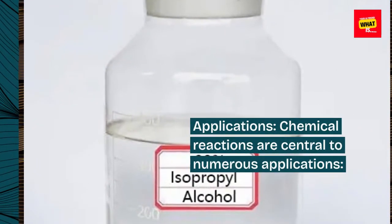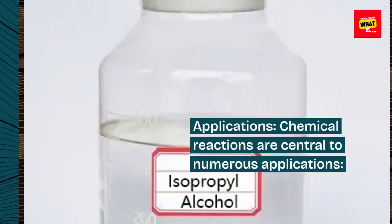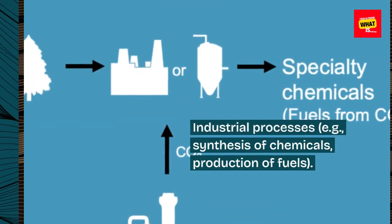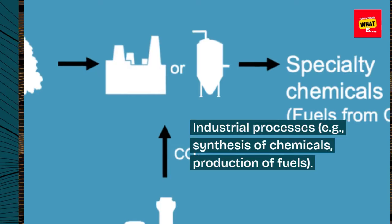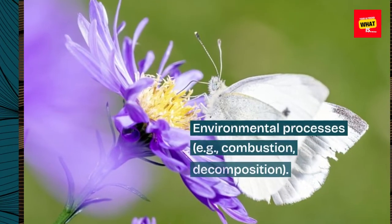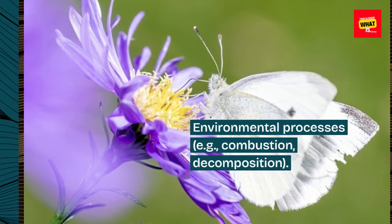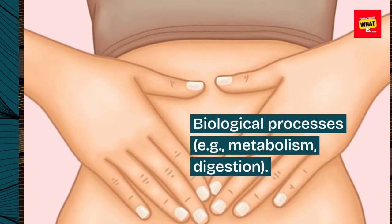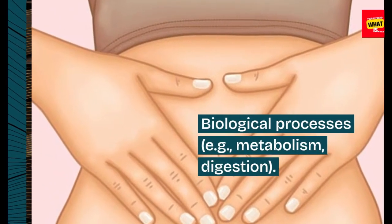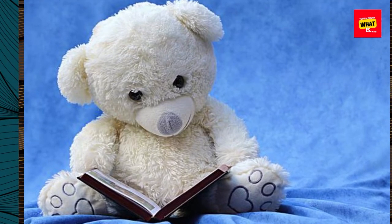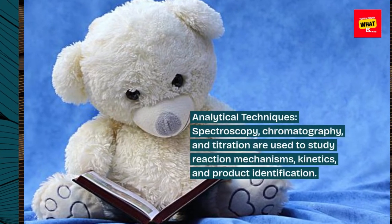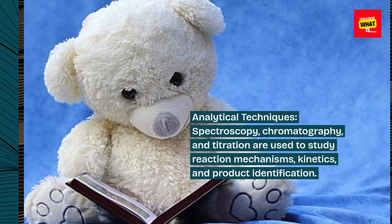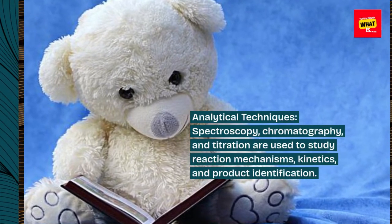Chemical reactions are central to numerous applications: industrial processes, e.g., synthesis of chemicals and production of fuels; environmental processes, e.g., combustion and decomposition; and biological processes, e.g., metabolism and digestion. Analytical techniques such as spectroscopy, chromatography, and titration are used to study reaction mechanisms, kinetics, and product identification.